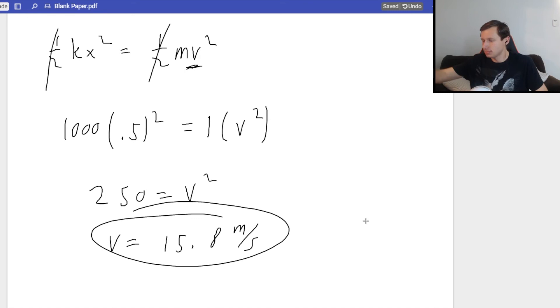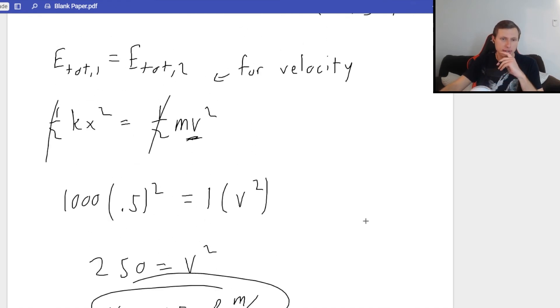Wait. I was going to ask, why did you use the equation for one half MV squared again? Because that's the equation for kinetic energy. Oh. Nice. Okay. Might have missed that. Thank you. Yep. No problem.